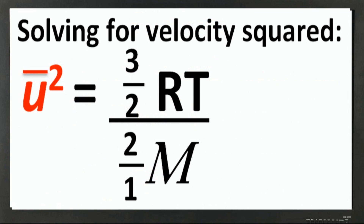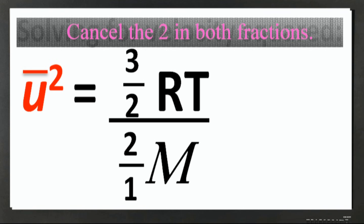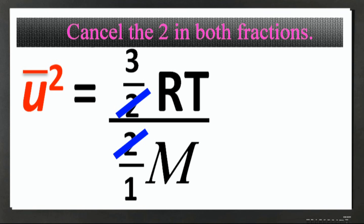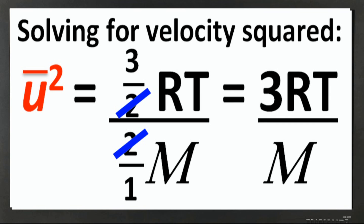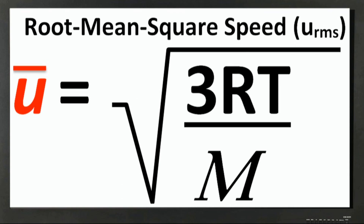To solve for the square of the average speed, simply divide through by the left side of the equation, generating the following relationship, where three-halves RT divided by two over one times the molar mass is equal to three RT divided by molar mass. Now solving for the average speed, simply take the square root of both sides. Average speed is equal to the square root of three RT divided by molar mass.